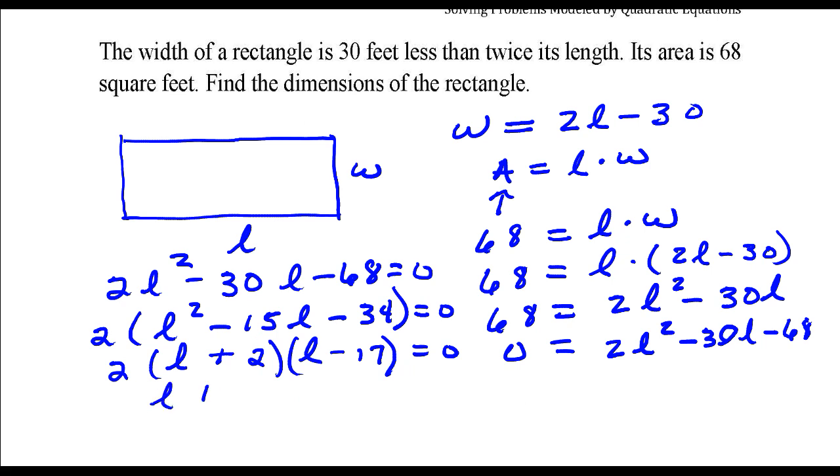Next, I'm going to set each factor that has an l in it equal to 0. Solve each equation. So l is negative 2, and l is 17.